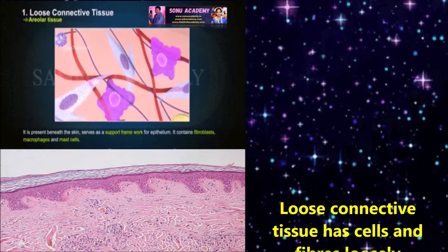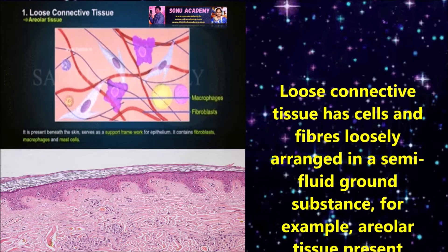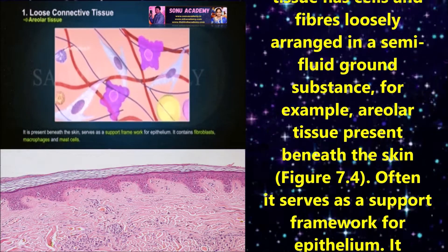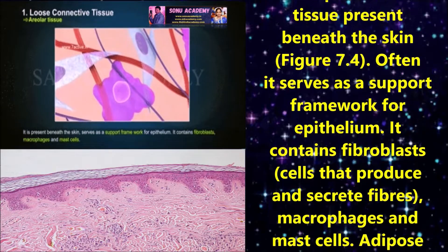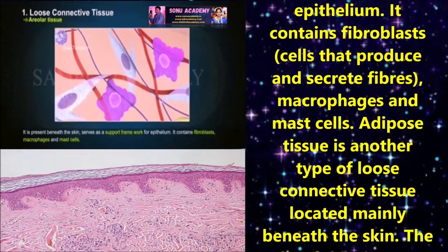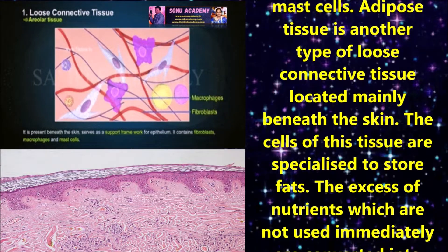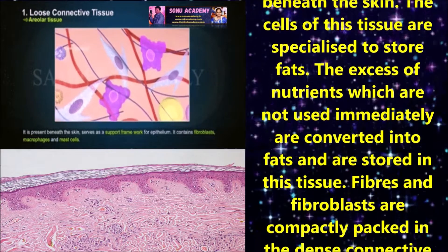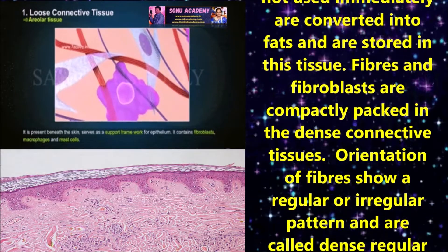Loose connective tissue has cells and fibers loosely arranged in a semi-fluid ground substance. For example, areolar tissue is present beneath the skin and often serves as a support framework for epithelium. It contains fibroblasts, macrophages and mast cells. Adipose tissue is another type of loose connective tissue located mainly beneath the skin. The cells of this tissue are specialized to store fats; excess nutrients which are not used immediately are converted into fats and stored in this tissue.